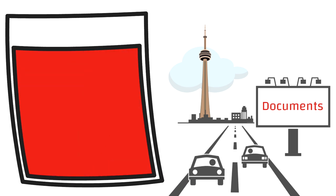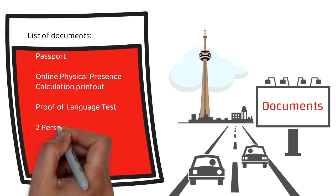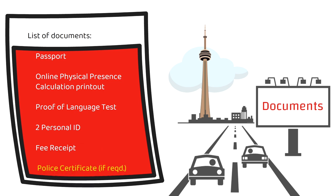Let's talk about the list of documents required. Your passport is the most crucial document — you have to submit scans of all pages with stamps, visas, or any information about you. Then the online physical presence calculation printout, which is very crucial — we'll see that calculator and how you can generate this printout. You also need proof of a language test. As I mentioned, you don't need to go for IELTS, CELPIP, or any French test — the result of a test you've already appeared for will work. You'll also need two personal IDs — your PR card, driving license, or any other valid photo ID — and the fee receipt, since you need to make the payment upfront and upload the receipt in your application.